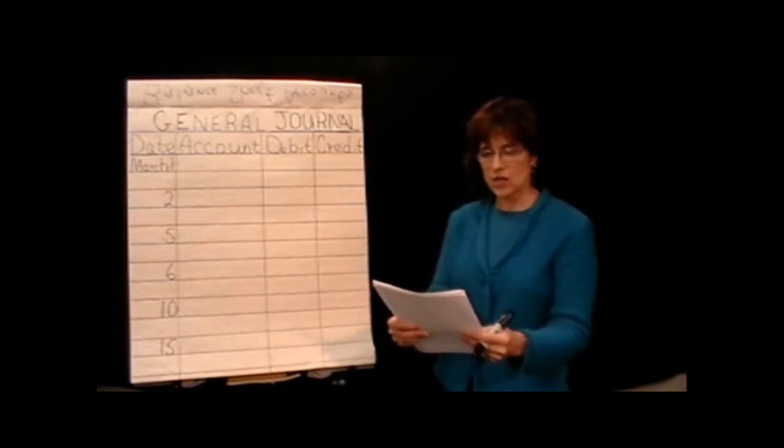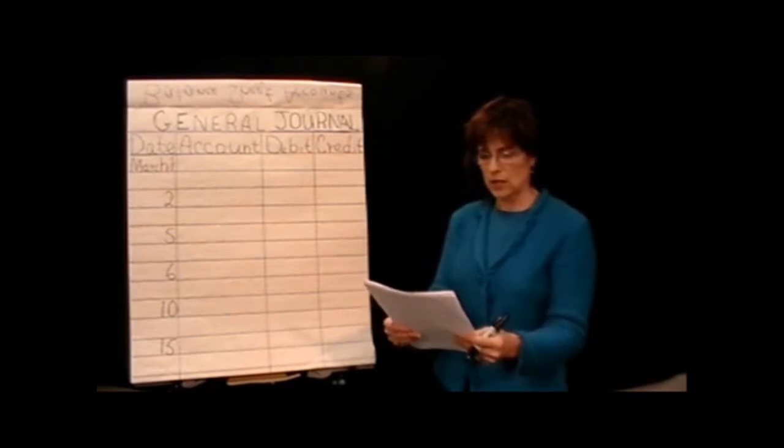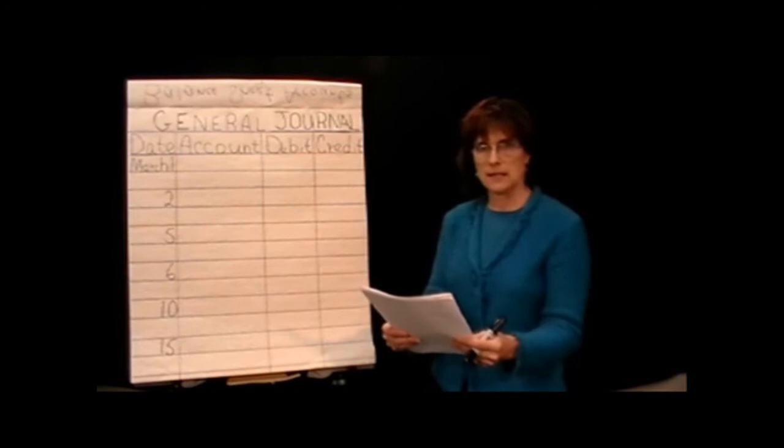It says the ABC company has the following accounts in its chart of accounts. It has cash, accounts receivable, supplies, office equipment, accounts payable, capital stock and retained earnings, dividends, fees earned, rent expense, advertising expense, utility expense, and miscellaneous expense.